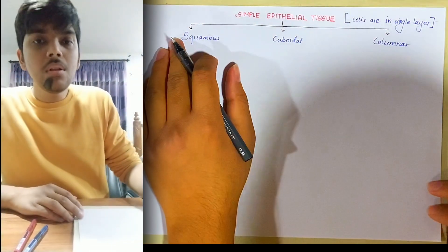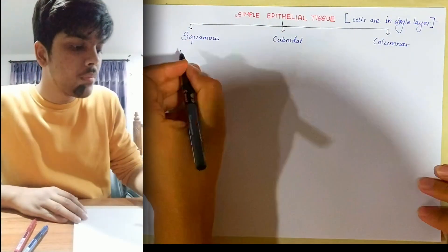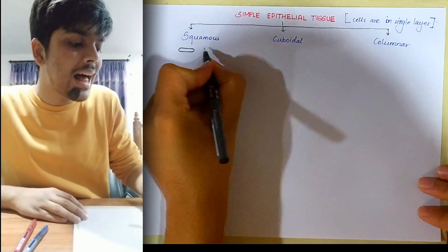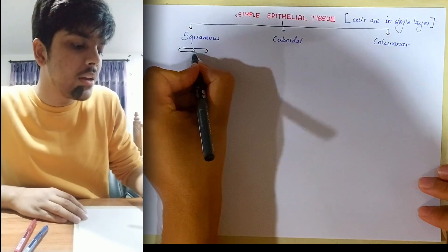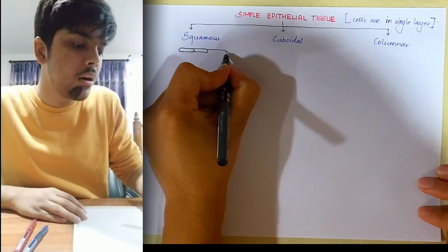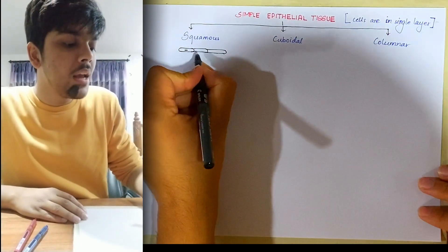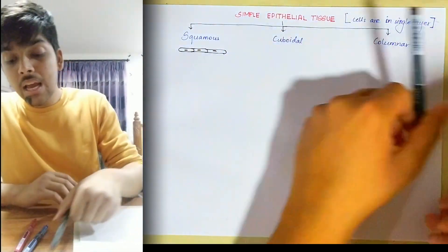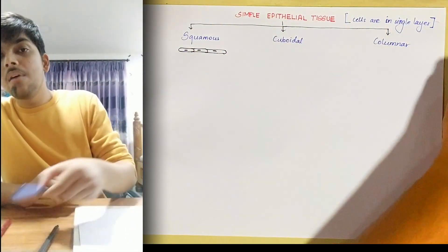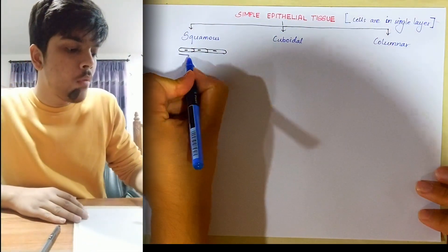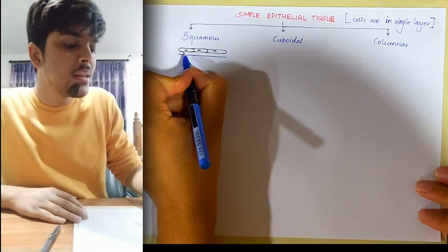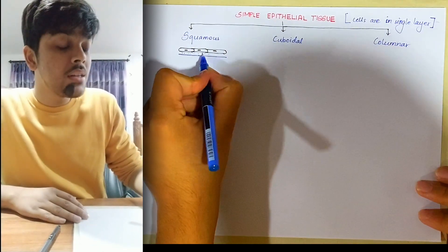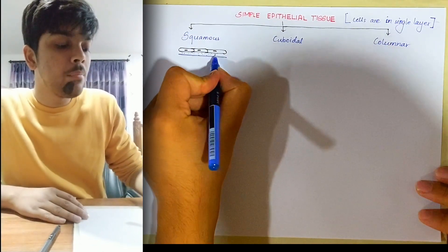Simple squamous epithelium: 'simple' meaning the cells are present in a single layer, 'squamous' meaning the cells that are present in that single layer are flat, with an oval nucleus centrally placed, and obviously it is present on a basement membrane.